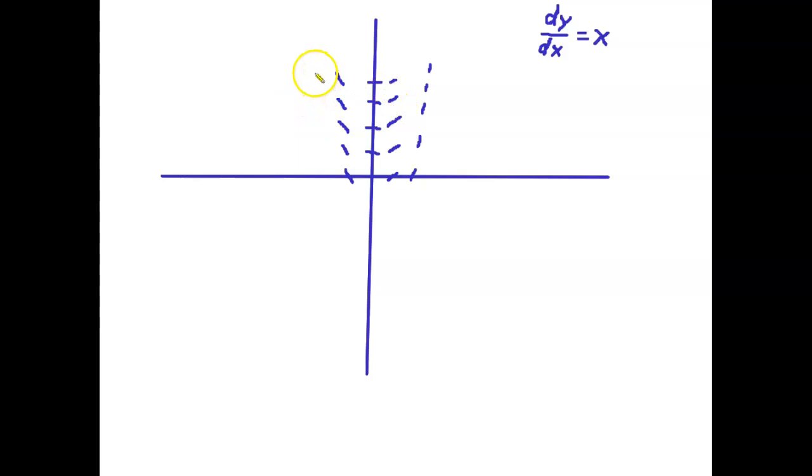Now we have these slope fields. Now here the slope is negative two, so it's like a little bit steeper. Remember, the slope is just going to be equivalent to the x-coordinate.